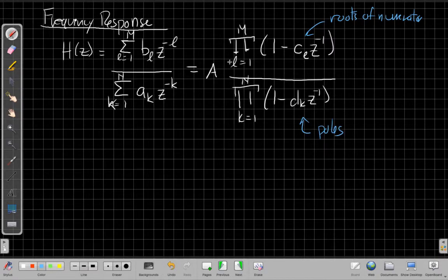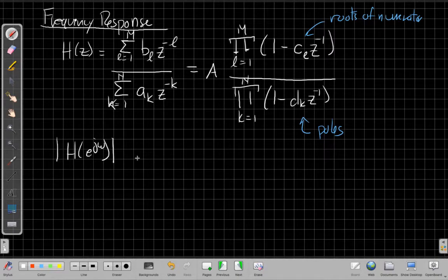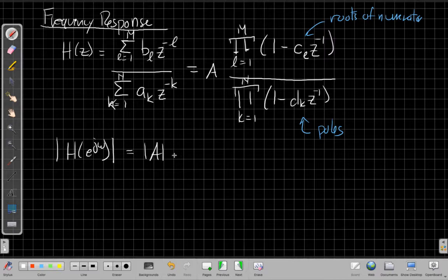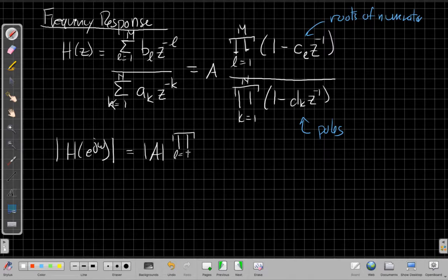So when I write it in this form, I write it in the factored form, I can then say, well, if I want to find the Fourier transform magnitude, I first set z equal to e^{jω}, and then take the magnitude. So on the right-hand side, I'll get the magnitude of a product is the product of the magnitudes, so that means I can bring this all the way inside.